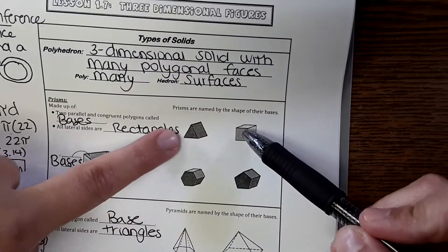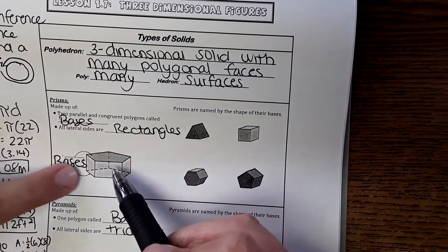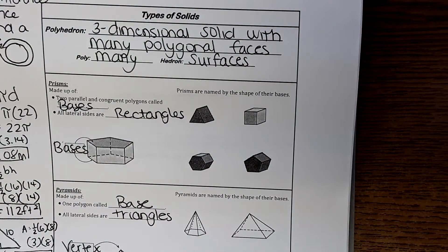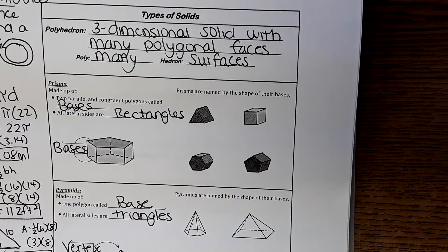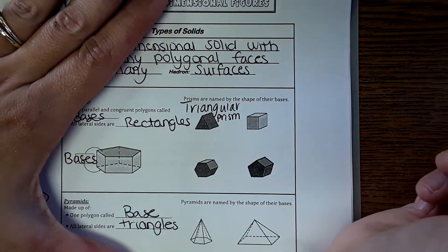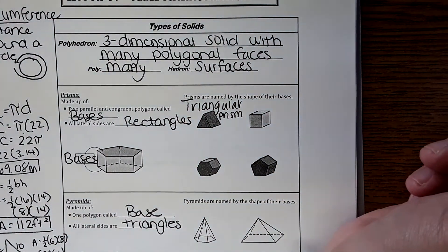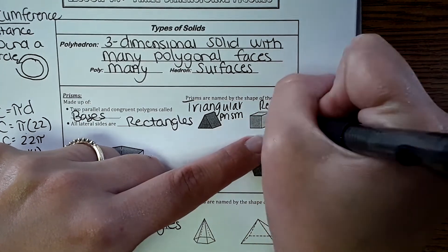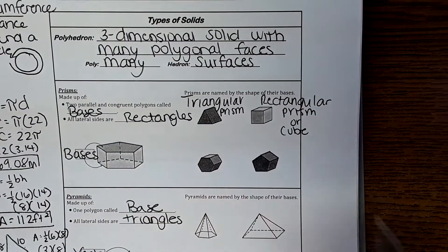A prism has two identical bases — the top and bottom are congruent, so if you know the measurements of one you have the exact same measurements for the other. Prisms are named based on their bases. Sometimes the base is on the bottom, sometimes it's sideways. Here we have a triangular prism, a rectangular prism — which can also be a cube if all the squares are the same all the way around.